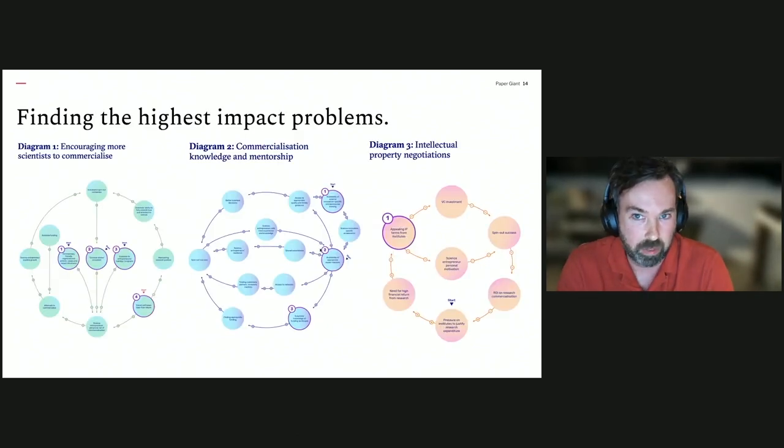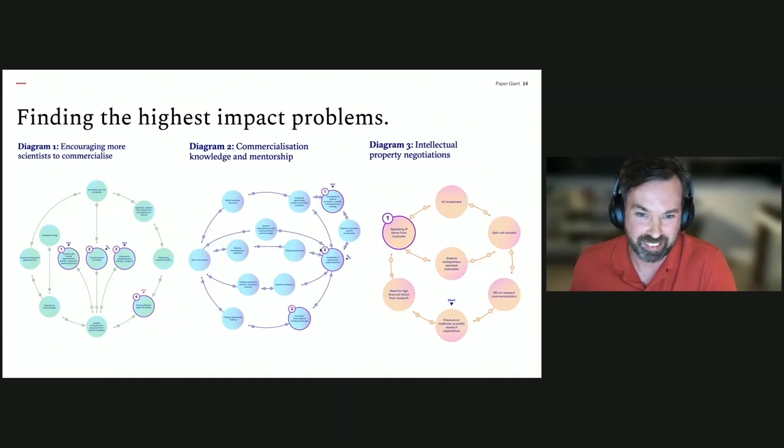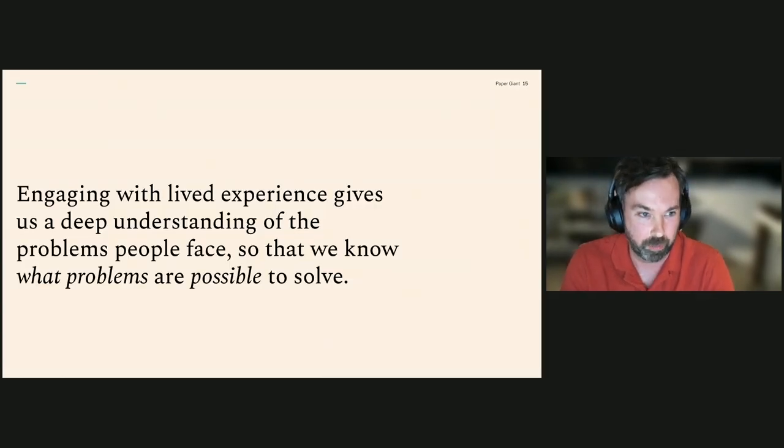Once we did that comparative analysis, we were then able to identify the common and highest impact problems that we might want to solve across all science entrepreneurs and all experience of all experiences of commercialization. So here's just three examples of some high impact problems that we identified with Liz. So obviously a big one around encouraging more scientists to commercialize. These are complex diagrams. I won't explain them in great detail, but that first problem is highlighting how scientists perceived risk of commercialization was a major factor in stopping them. Chris, Chris got two minutes left. Okay. Two minute bell. Thanks Liz. Commercialization, knowledge of mentorship, and then intellectual property negotiation. So the problems are interesting in and of themselves, but the key point that I want to make here is that engaging with lived experience gives us a deep understanding of the problems people face. So that we know what problems are possible to solve. Not all of these problems are solvable by certainly not by every single actor, but you have that representation by engaging with them.